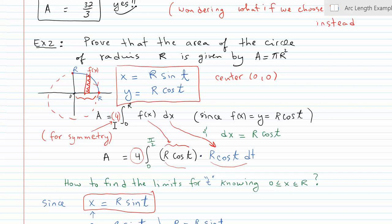It's important to note that the factor of 4 is still there when making the switch to parametric form. f(x) by definition is y, and y is given as r cosine t. The derivative of x is simply the derivative of r sine t — as you can see, I'm showing that work in green here.